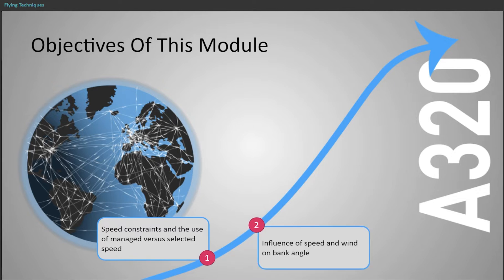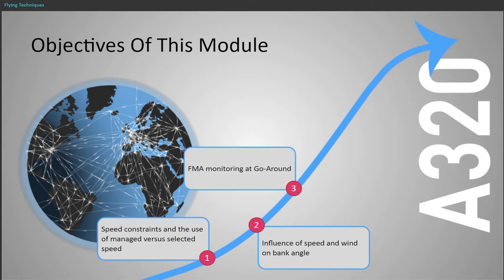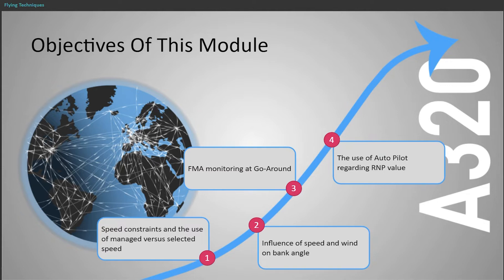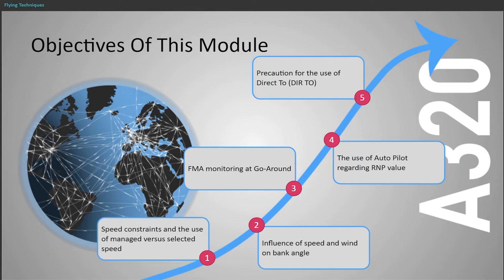Second: the influence of speed and wind on the bank angle. Third: FMA monitoring at go-around. Fourth: the use of autopilot regarding RNP value. And fifth: a precaution for the use of direct-to.